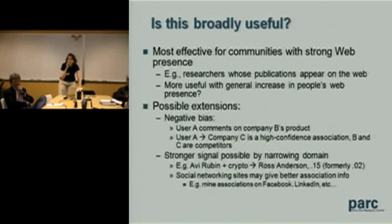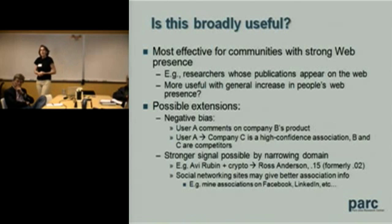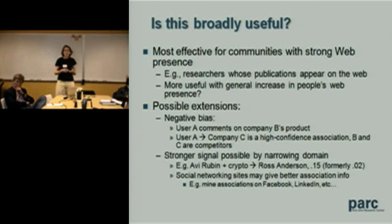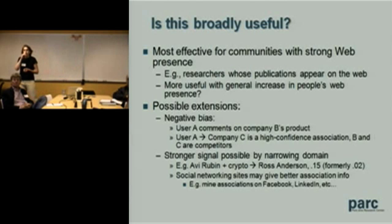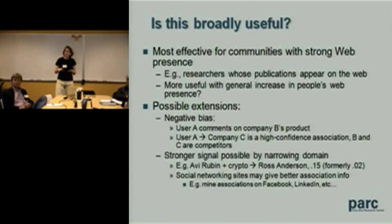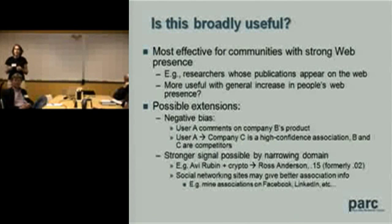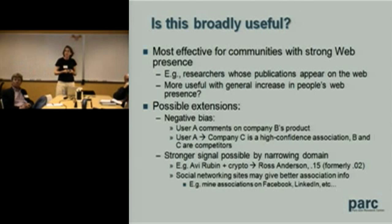The community needs a strong web presence, so it's not clear how broadly you can use this. Another way to get more value might be making it more sophisticated. If I'm on a message board commenting about Company A, maybe there's no association between me and Company A, but there is a strong association between me and Company B, a competitor — that could also be very useful for bias detection. A final comment: we were looking for associations broadly on the web with no conditioning to get a better signal. But you can very easily get a better signal — conditioning on 'cryptography' ups the association between reviewer Avi Rubin and Ross Anderson almost eight times, helping ensure you're picking up hits for the right people.